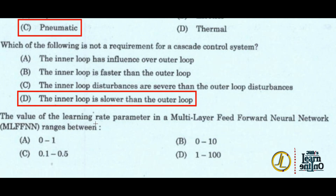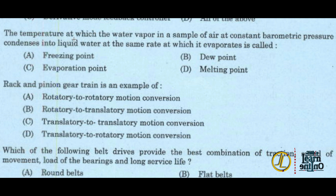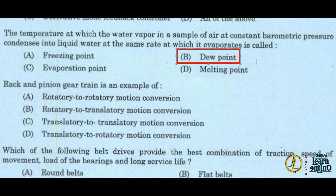Next: the value of the learning rate parameter in a multi-layer feed-forward neural network ranges between 0 and 1 — option A. A SCADA system performs data acquisition, network data communication, data presentation, and control — the answer includes all: 1, 2, and 3. The temperature at which water vapor in a sample of air at constant barometric pressure condenses into liquid water at the same rate at which it evaporates is called the dew point — option B.